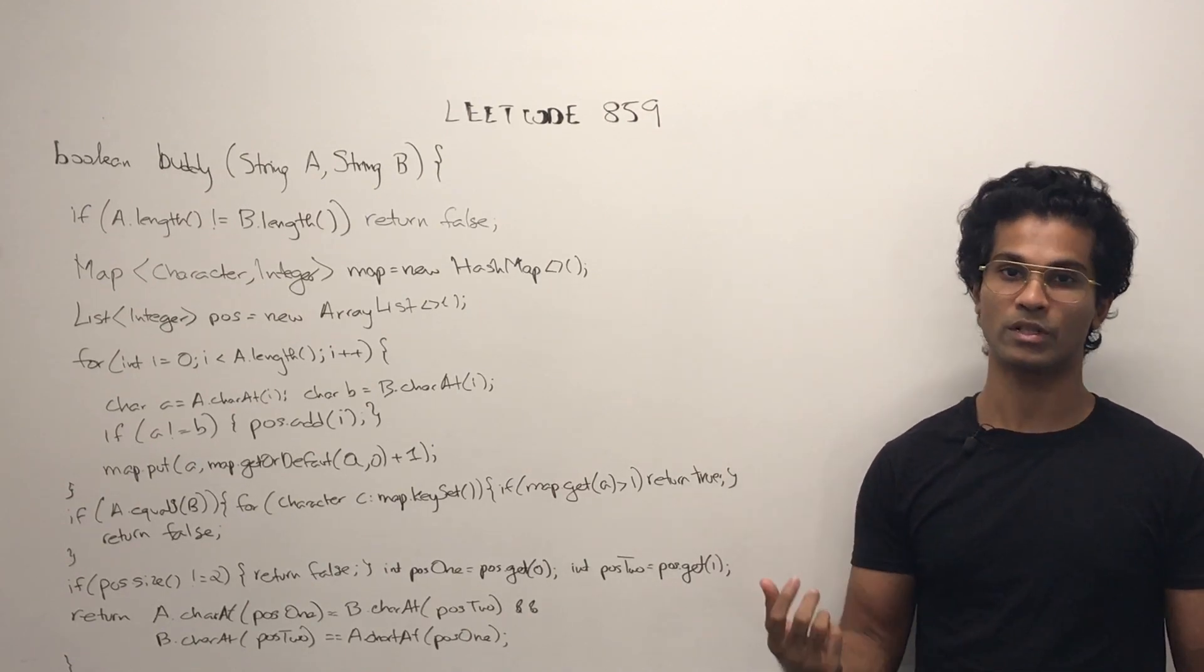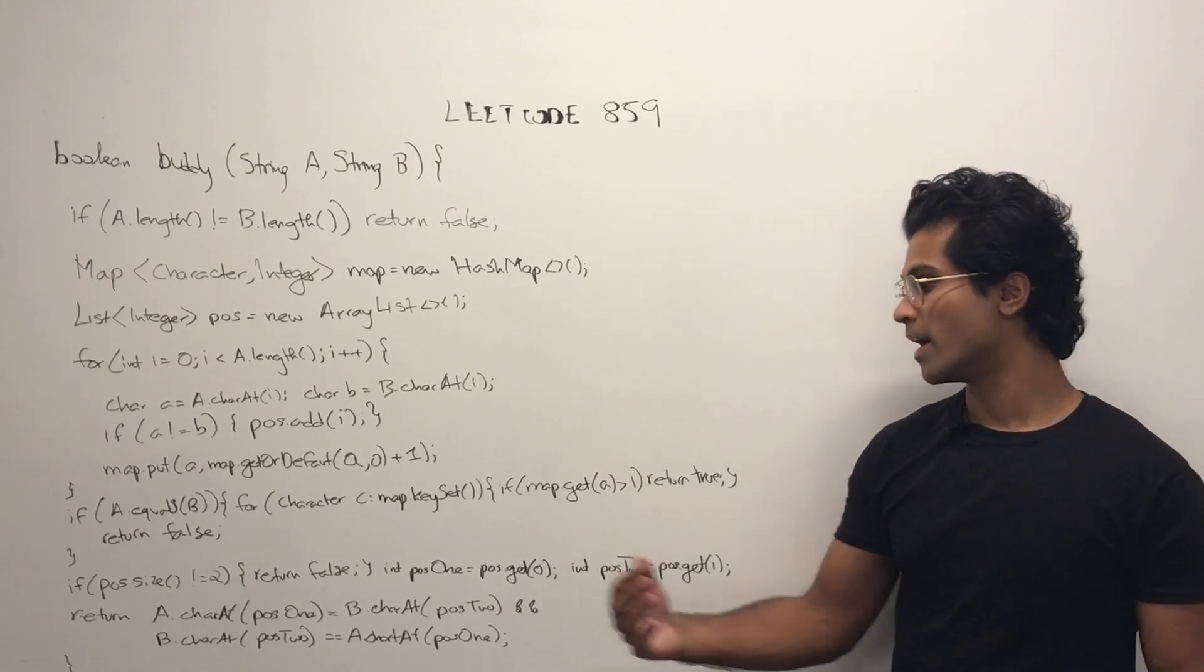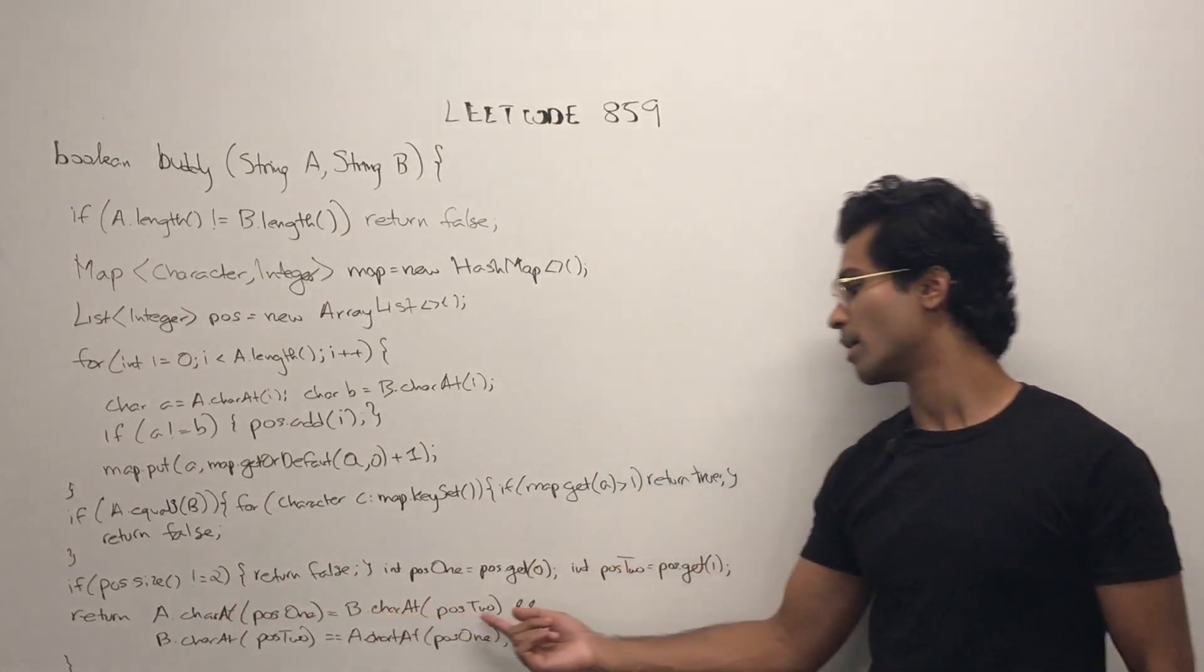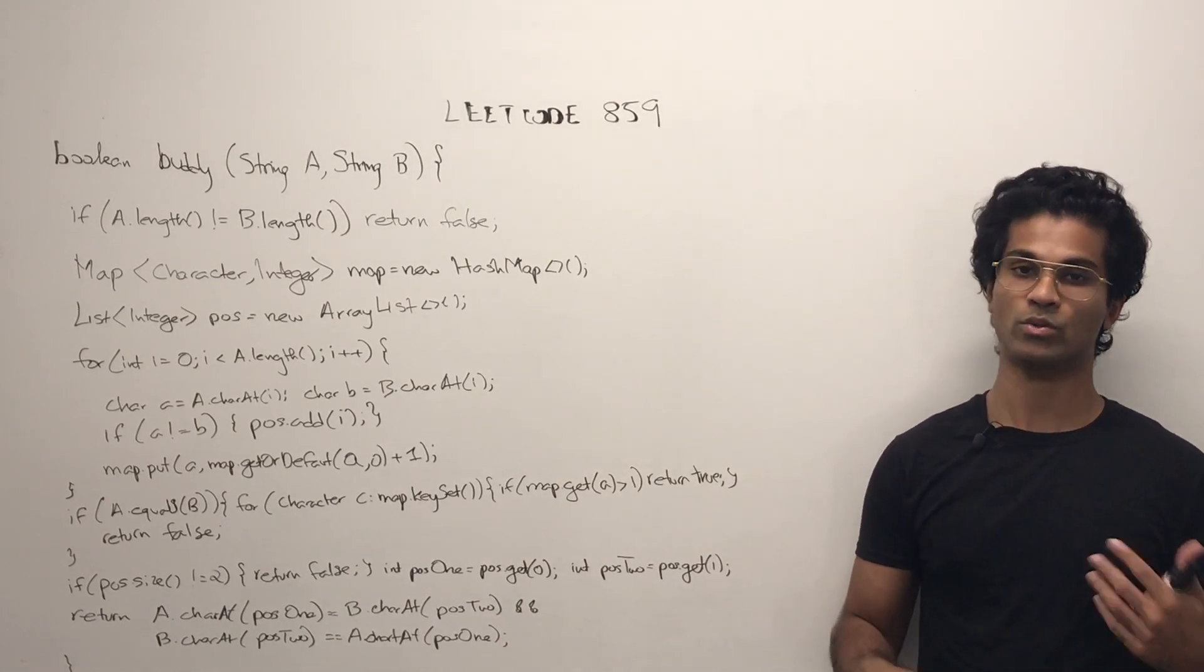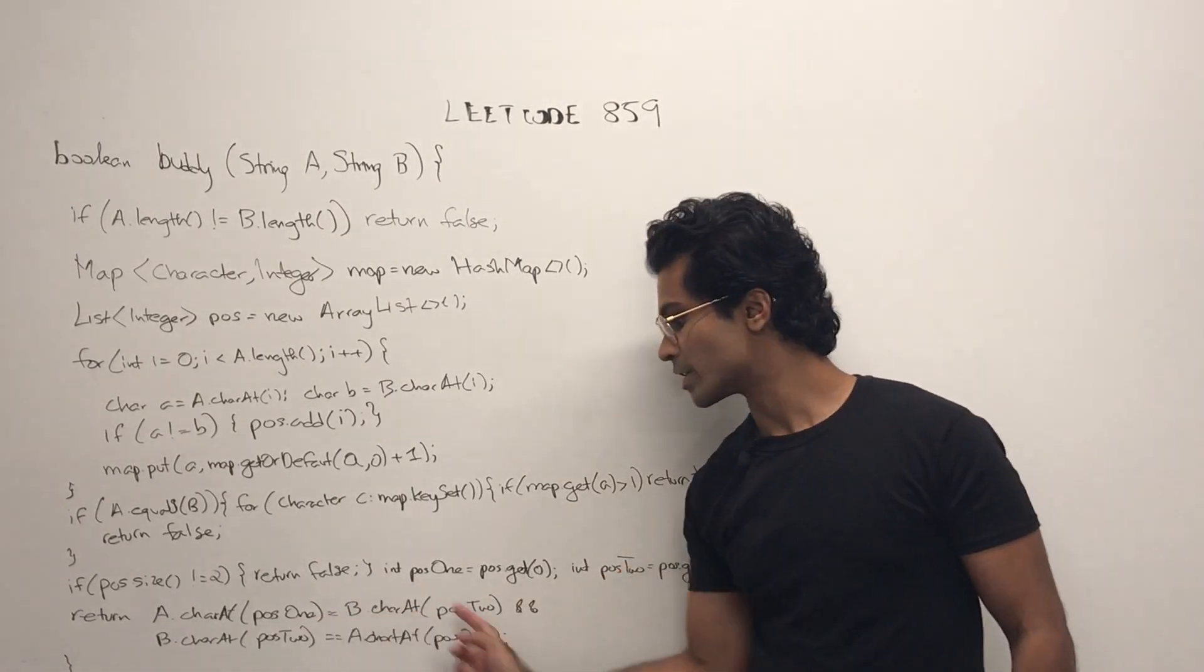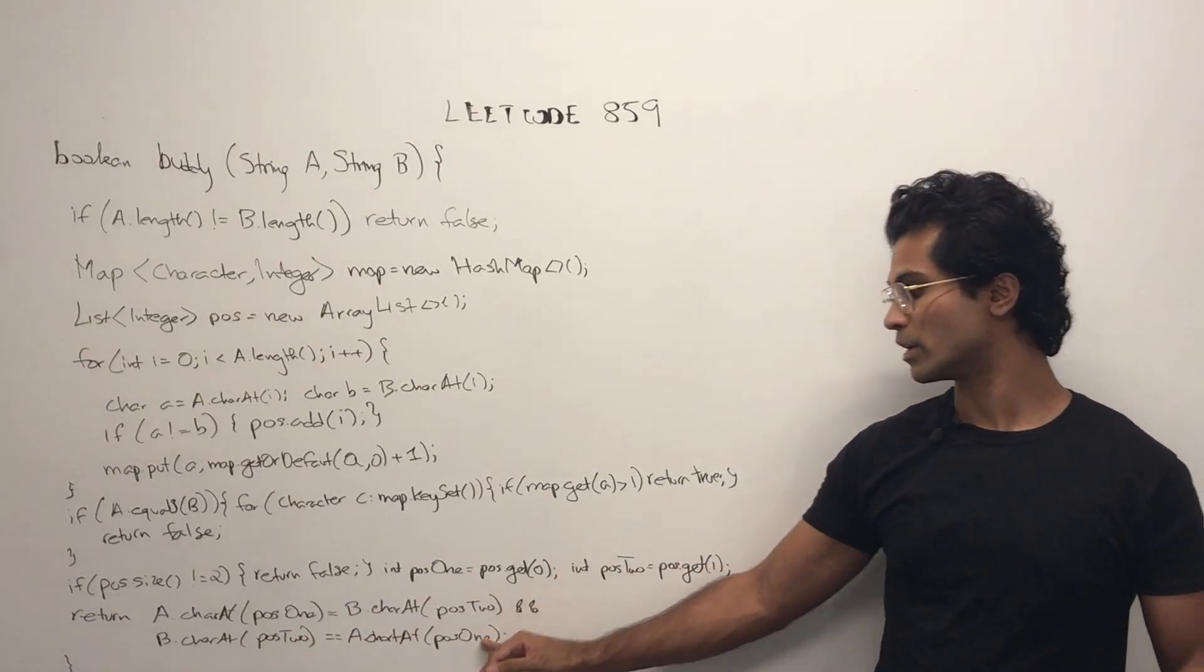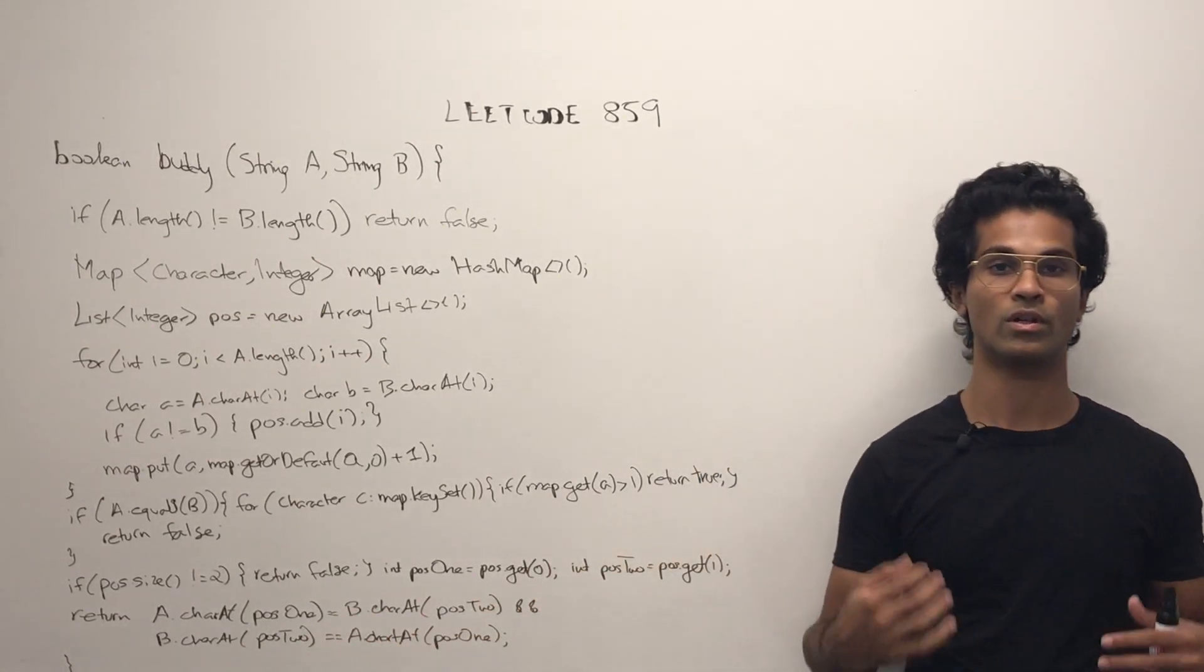Let's use those positions to actually swap the letters and finally see if the strings could be the same if they actually get swapped. And if everything checks out then we return true. Otherwise if one of these doesn't check out then we return false.